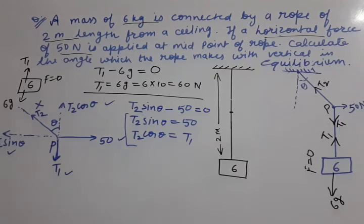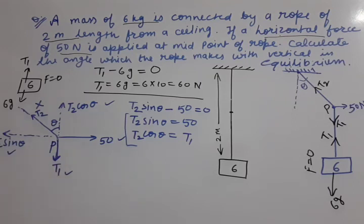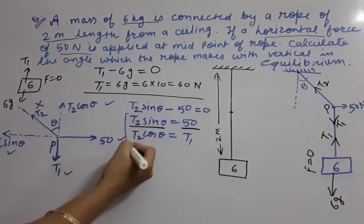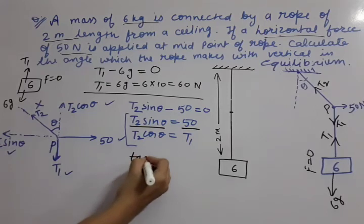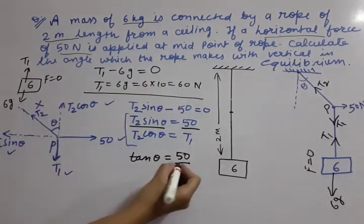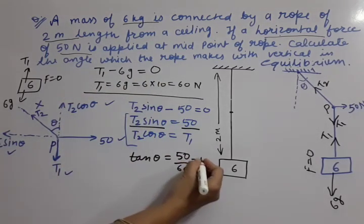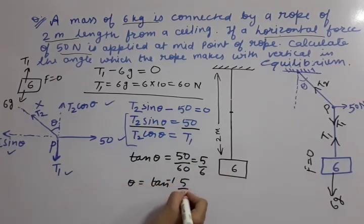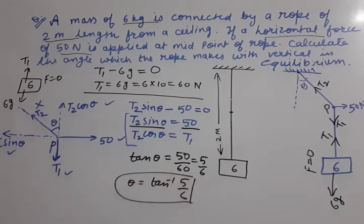How do we solve these two equations? Whenever two equations contain sin theta and cos theta and we need to find angle theta, we divide the two equations. T2 cancels, and sin theta / cos theta = tan theta, giving tan theta = 50 / T1. We already know T1 = 60, so tan theta = 50/60 = 5/6. Therefore theta = tan⁻¹(5/6). This is the answer.